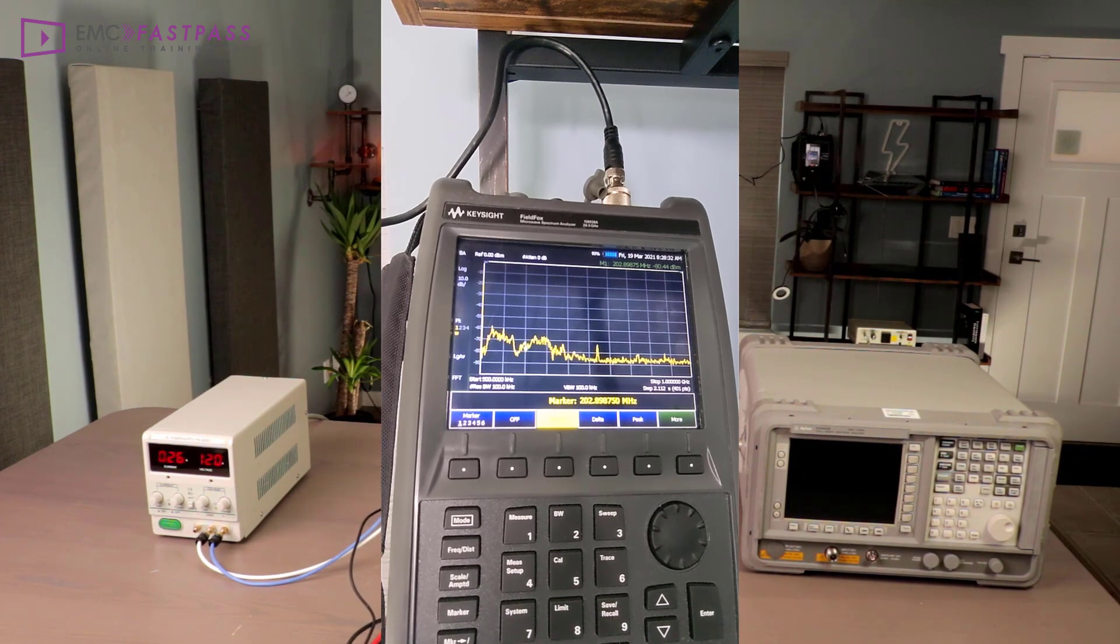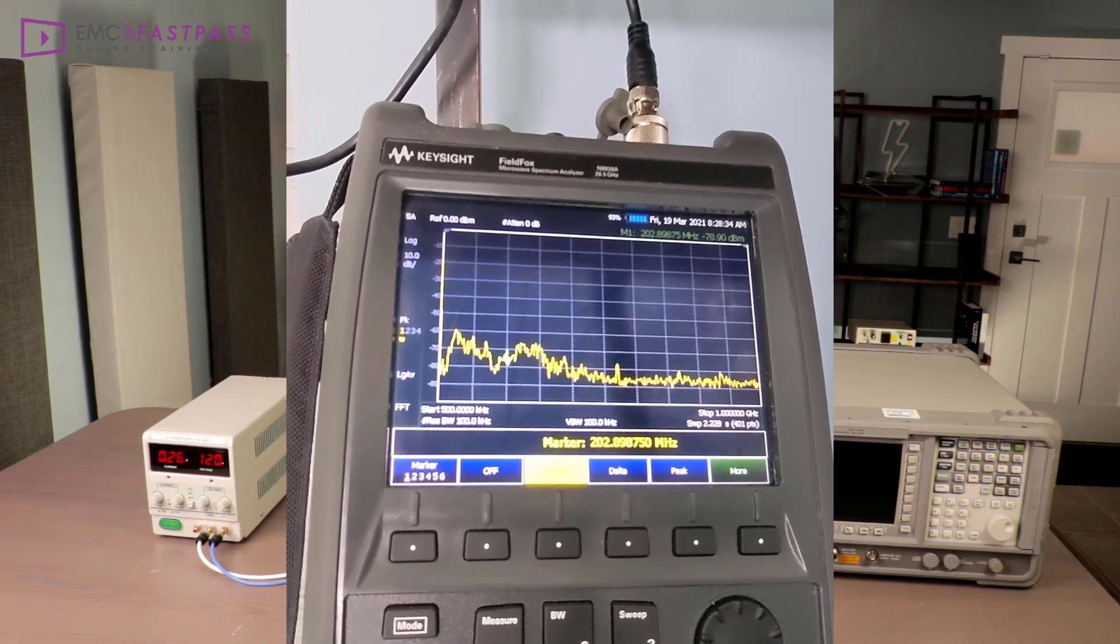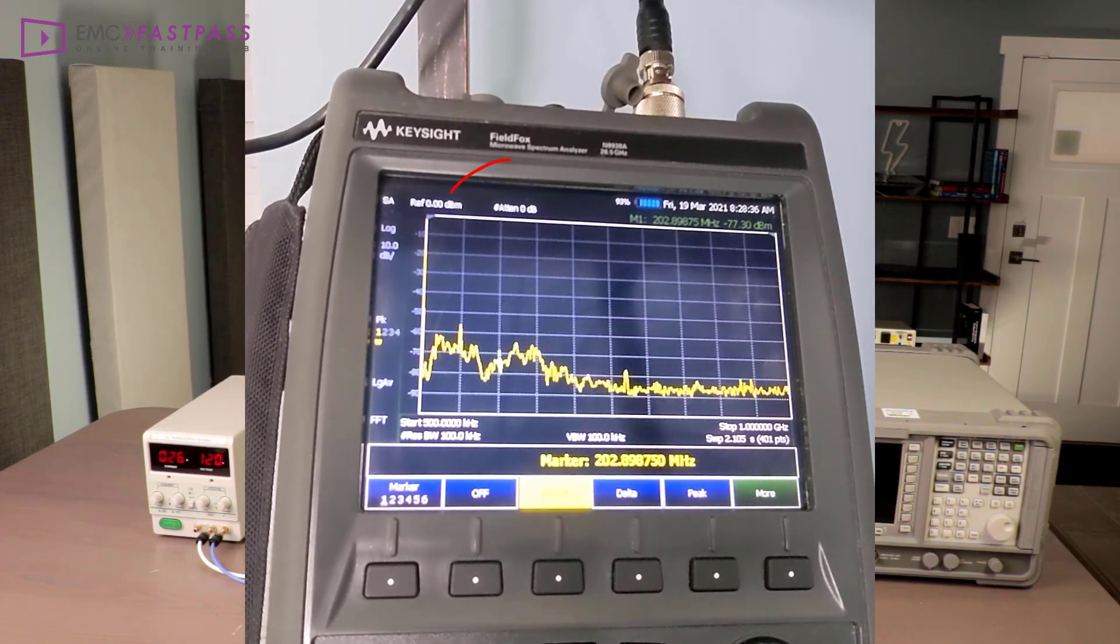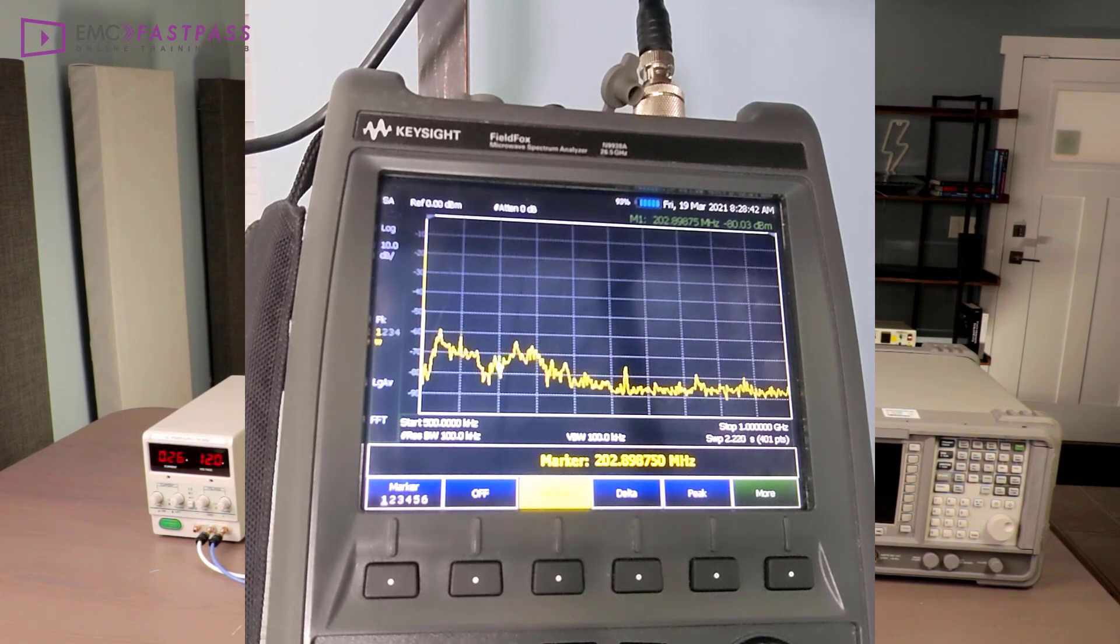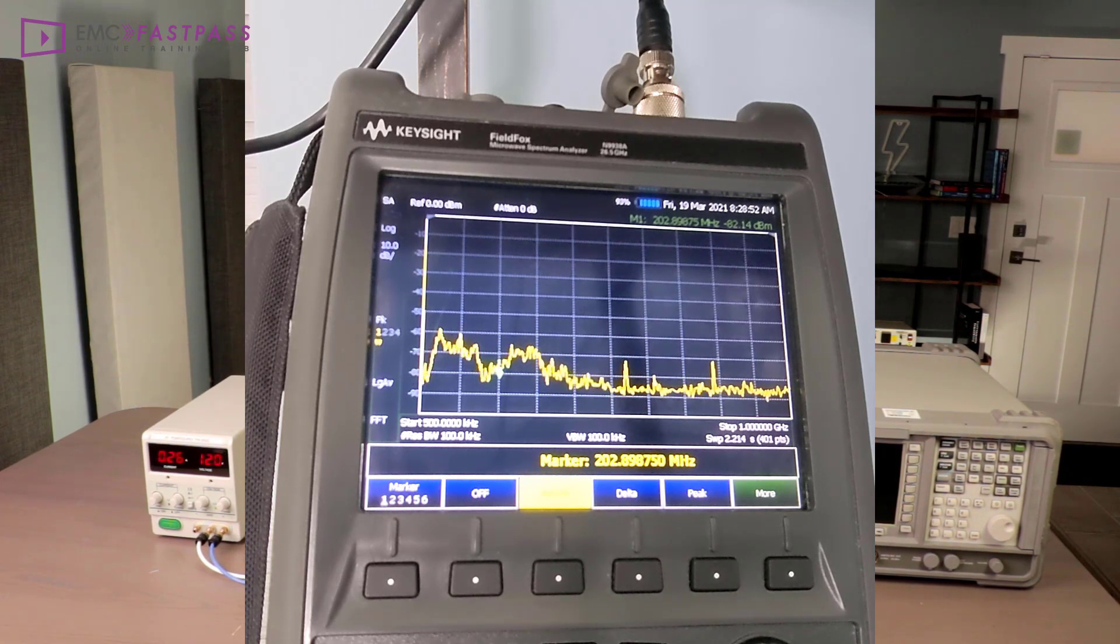The first thing I did was to lower the internal attenuation to zero dB. You do have to be a bit careful with that because if you have a powerful transmitter nearby it can overload your analyzer input. And worst case it can damage your analyzer because there's essentially no protection left on the input. But it does give you some more margin.